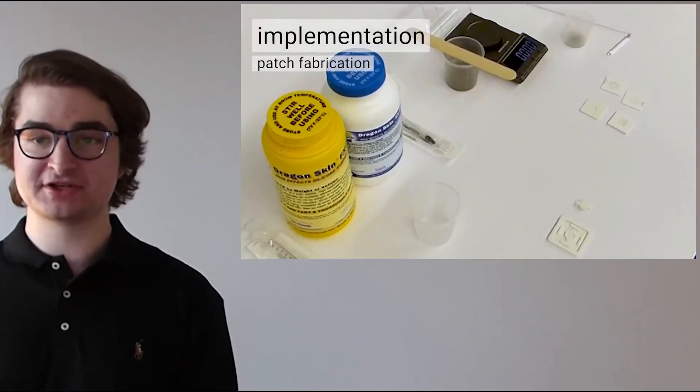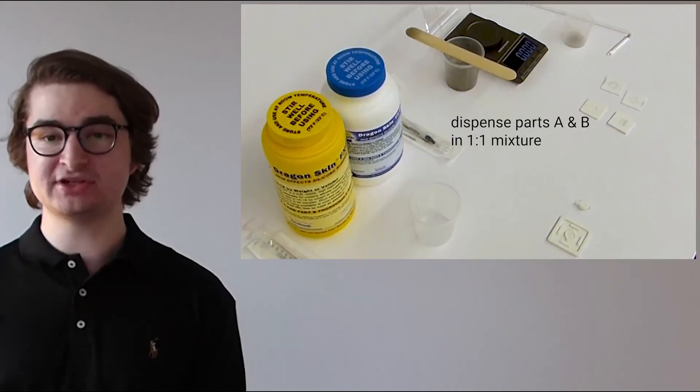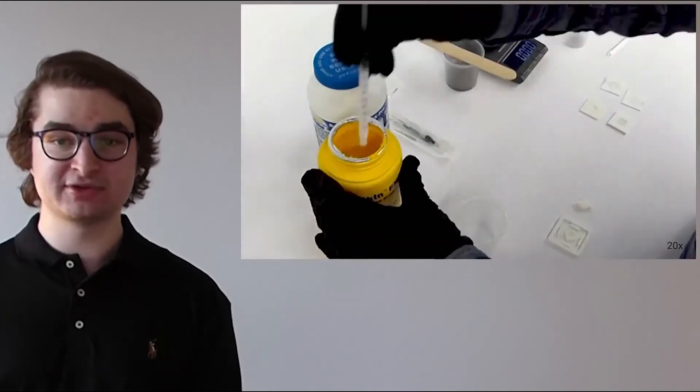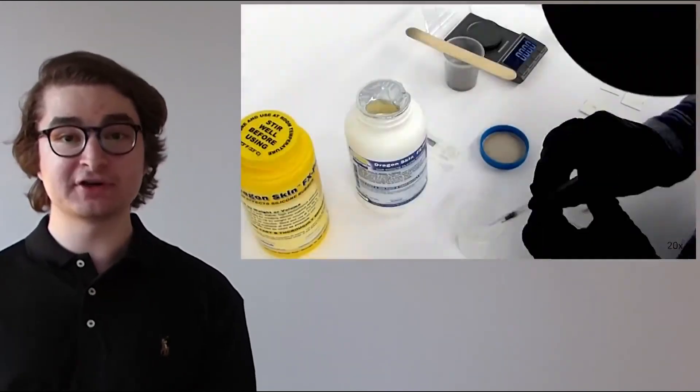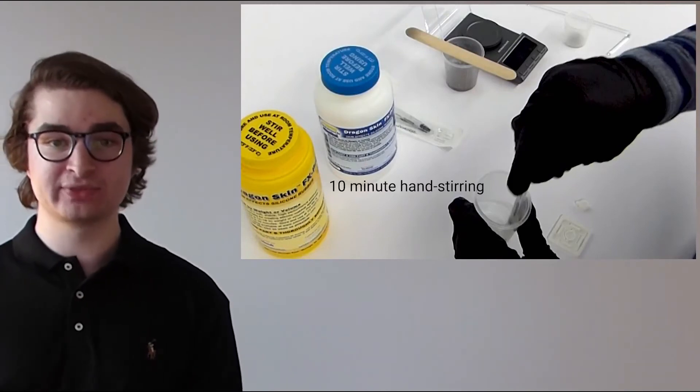Here is how we fabricate our patches, which are made of two parts: a soft and stretchable magnet made of silicone mixed with permanent magnetic powder adhered to a flexible silicone mechanism. First, the silicone mechanism is made by casting silicone into a mold. Next, we fabricate the soft magnets by mixing the silicone and magnetic powder.